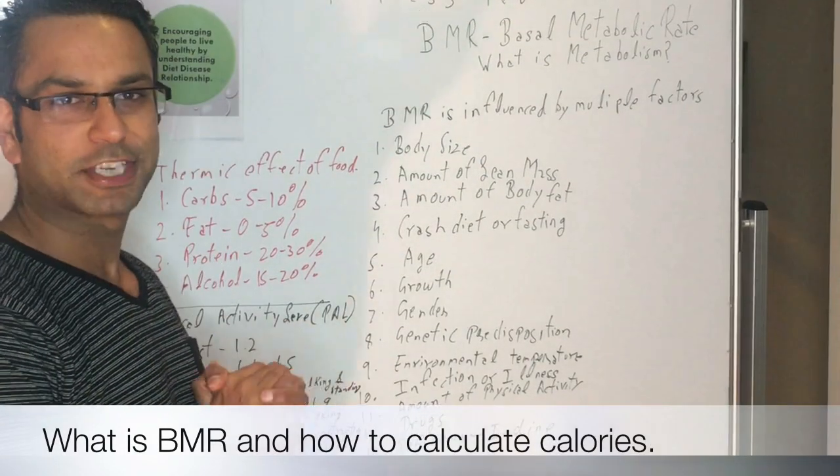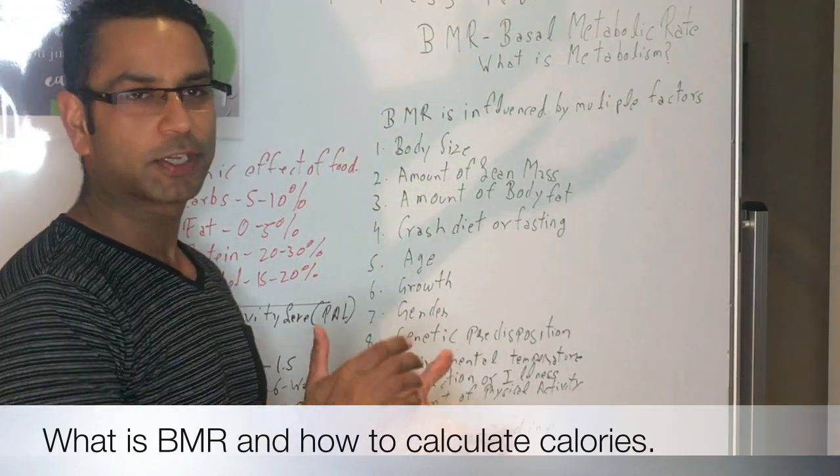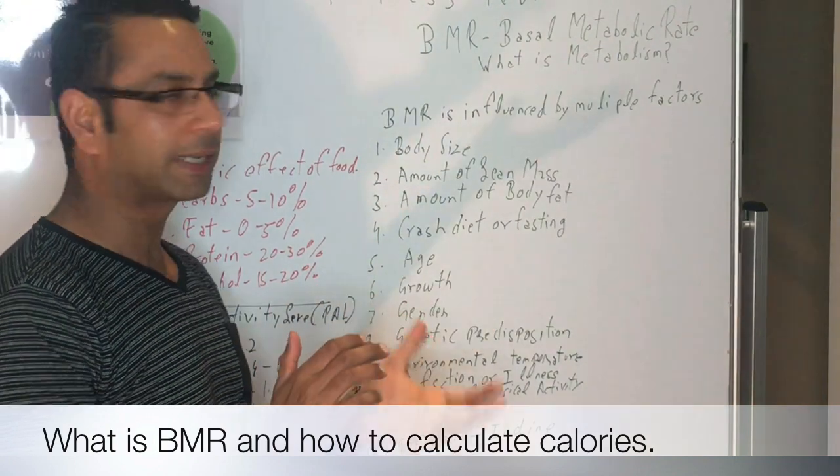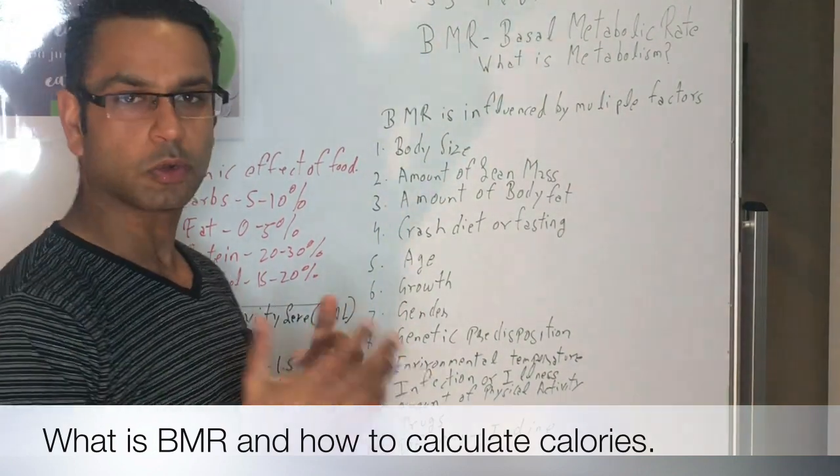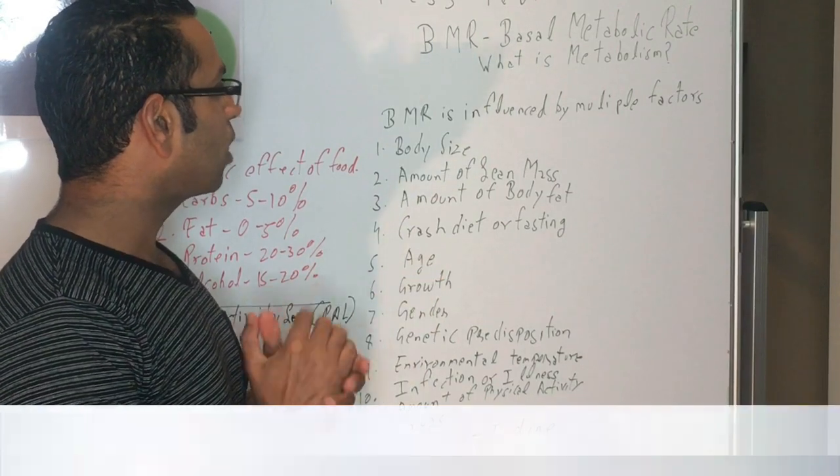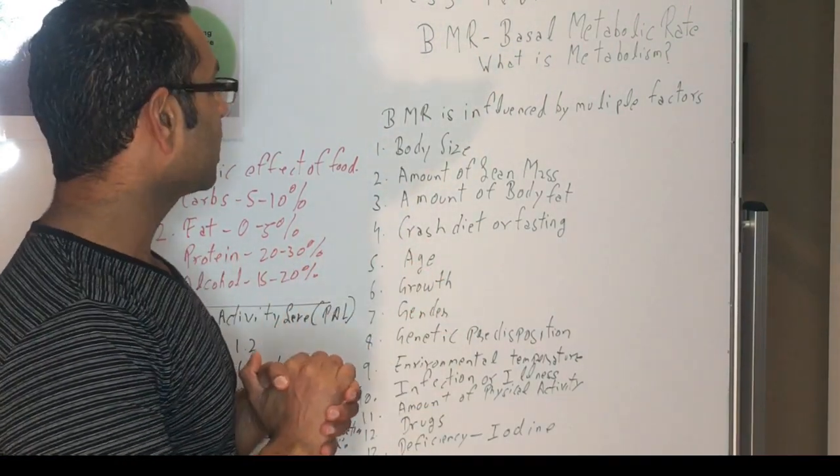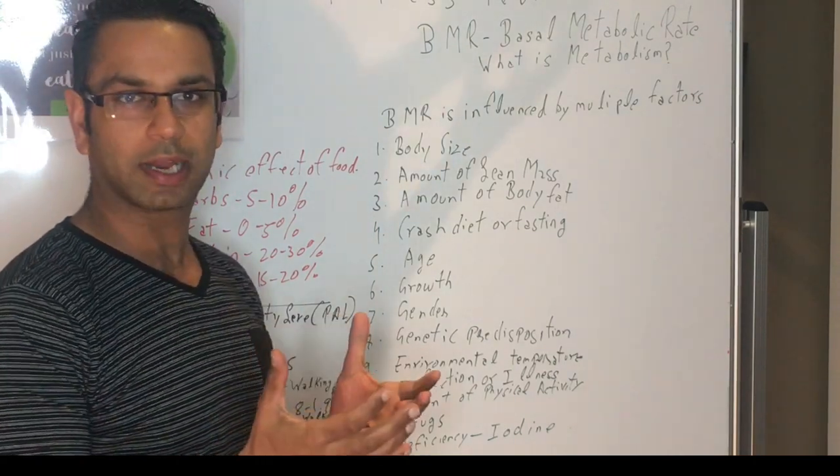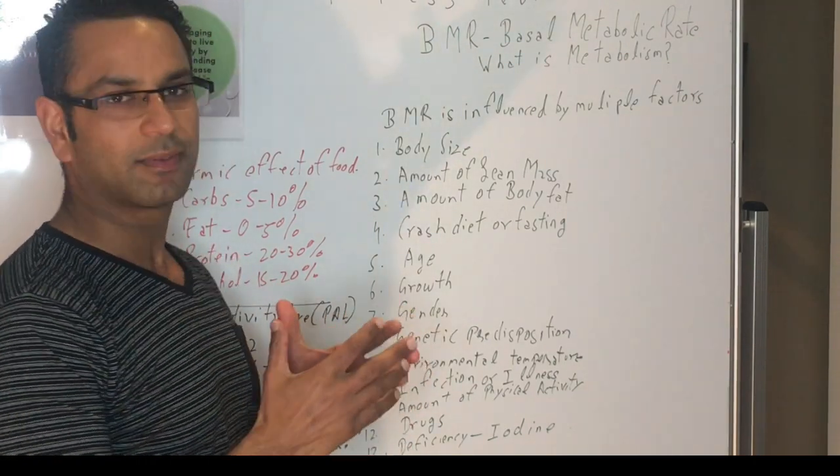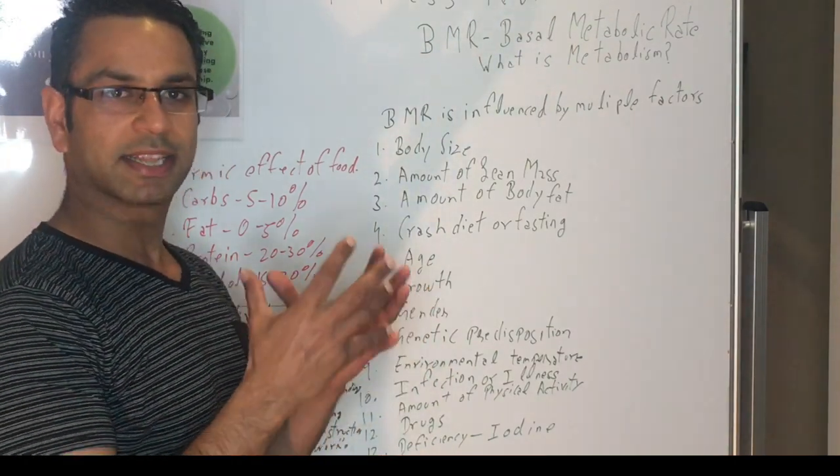Hello everyone, welcome back to Fitness Nutrition and Soul channel. This is your friend Robin. Today we're going to talk about the basal metabolic rate, which is also known as BMR. So how do they calculate the BMR? The BMR is actually generally calculated 12 to 14 hours after resting.